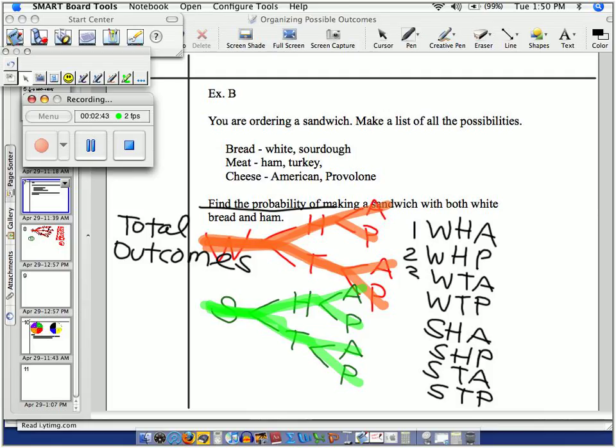Eight. One, two, three, cuatro, cinco, seis, siete, eight. Eight sandwiches. Eight total outcomes.